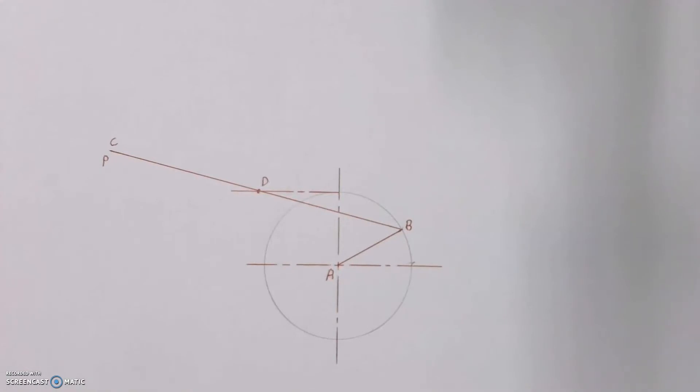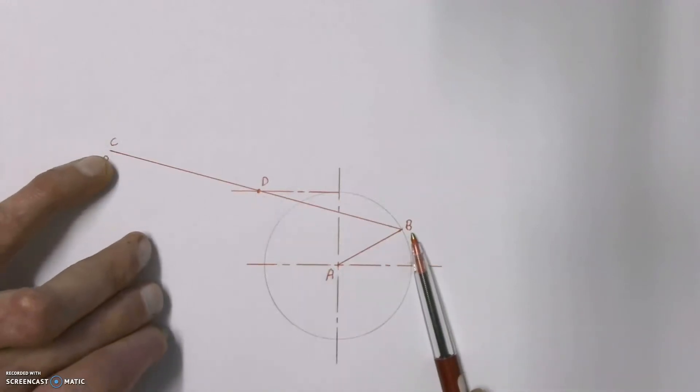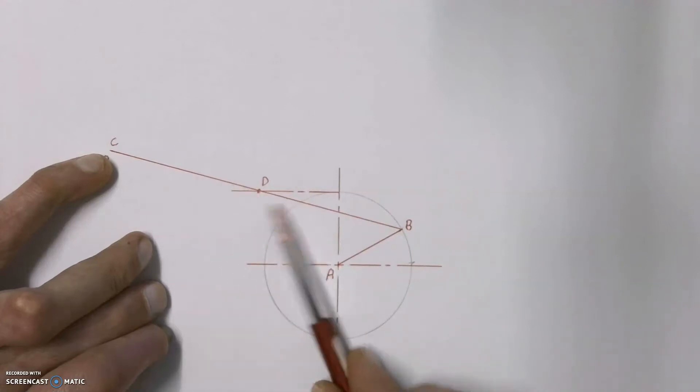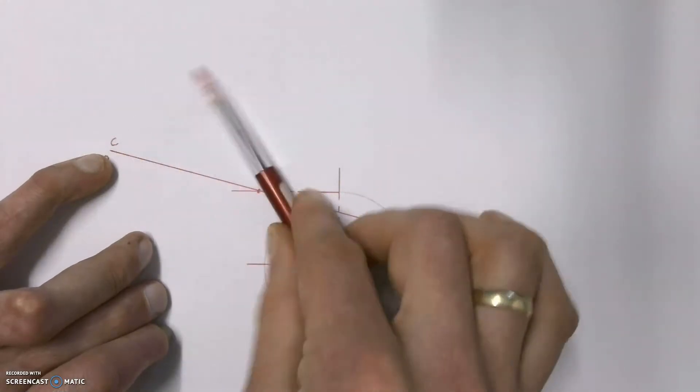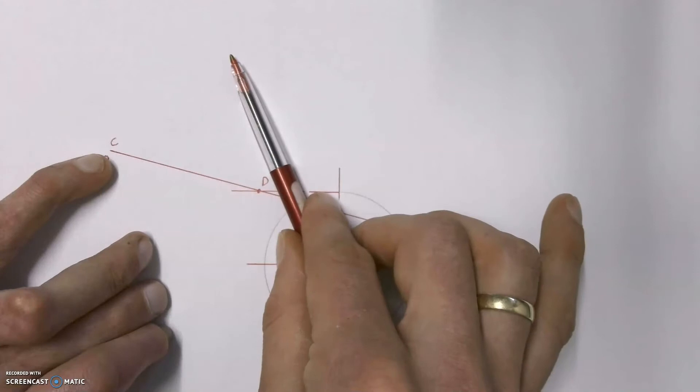In the question they tell us that point D over here is a slotted link, which means that our line or arm CB can move through point D and it can also swivel around point D like that.